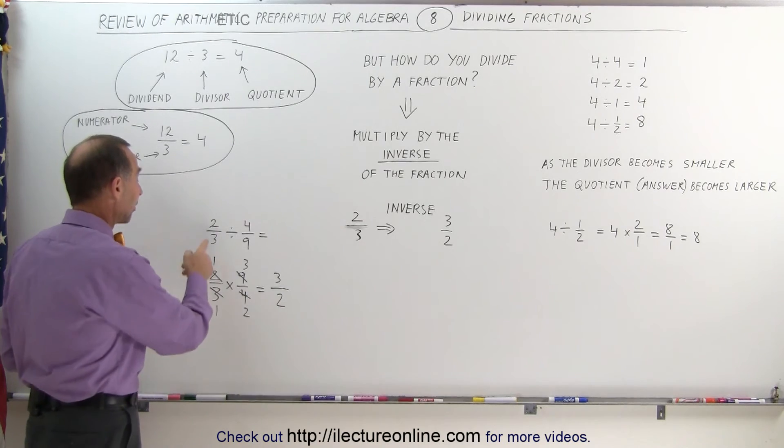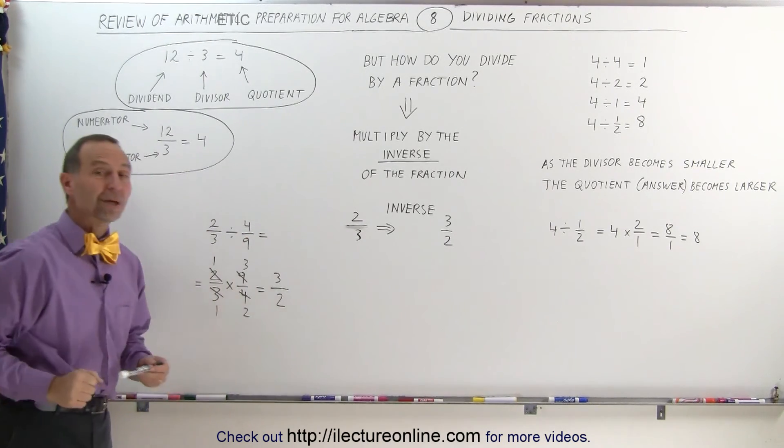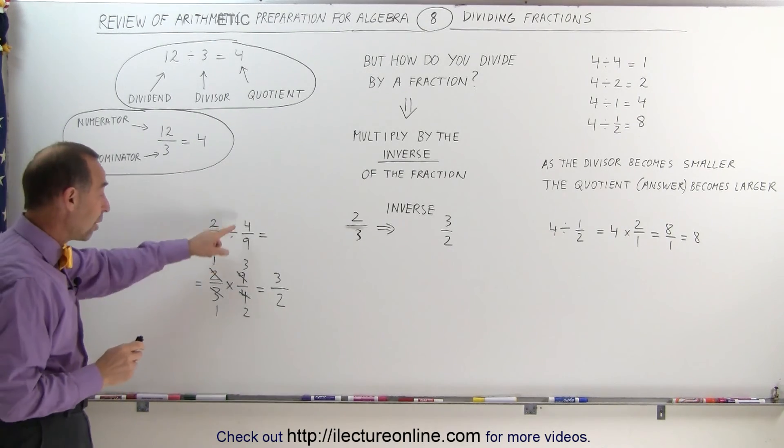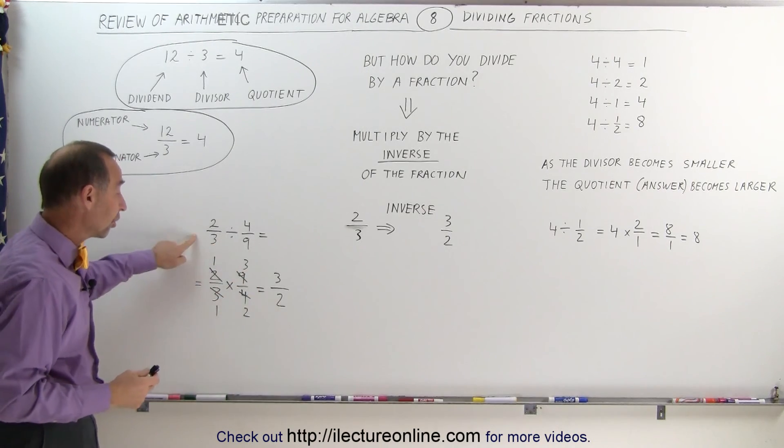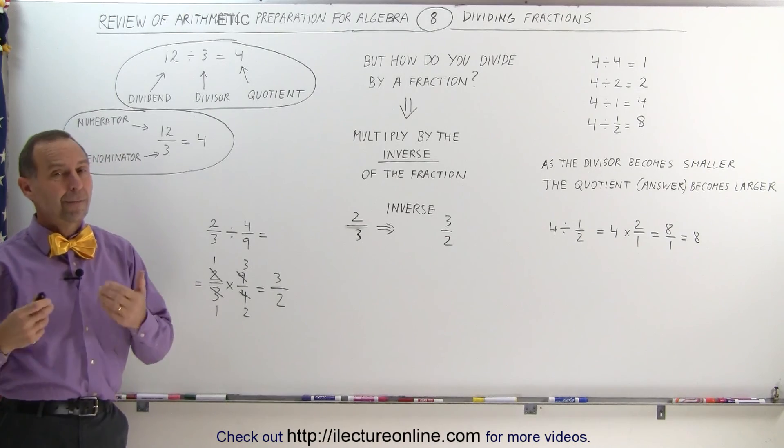So when you take the fraction 2 thirds and divide it by 4 ninths, you get 3 halves. Remember, when you divide by numbers smaller than 1, and 4 ninths is smaller than 1, you get a bigger number than what you started with, which indeed is what we got here. So that's how we divide by a fraction.